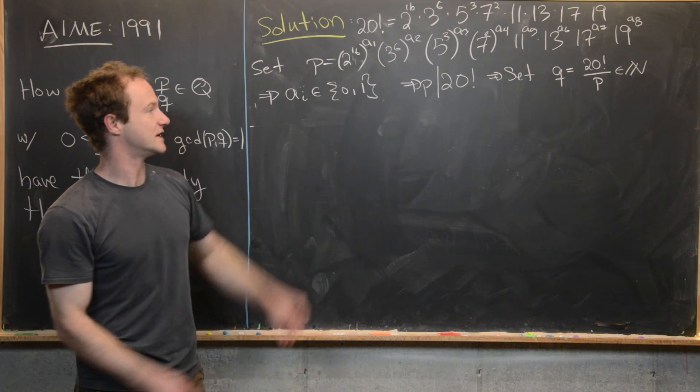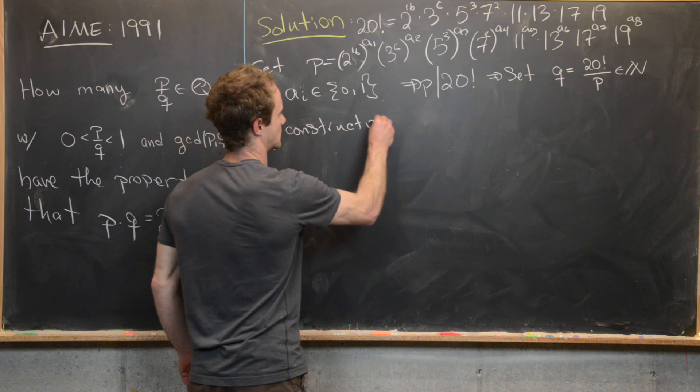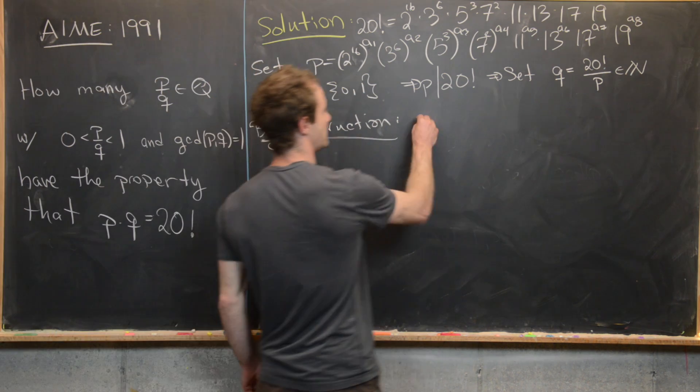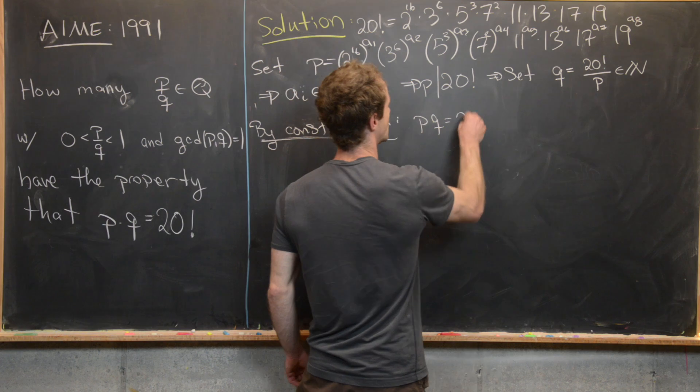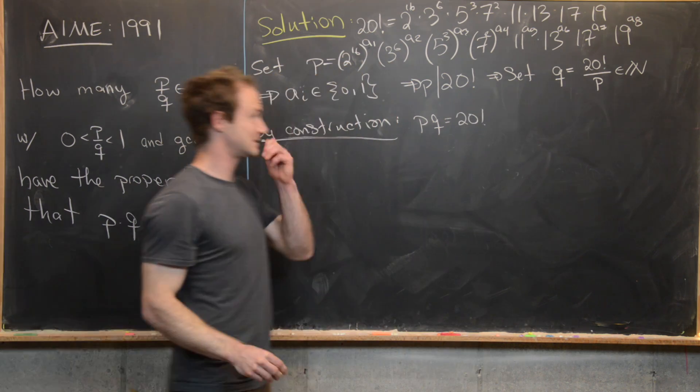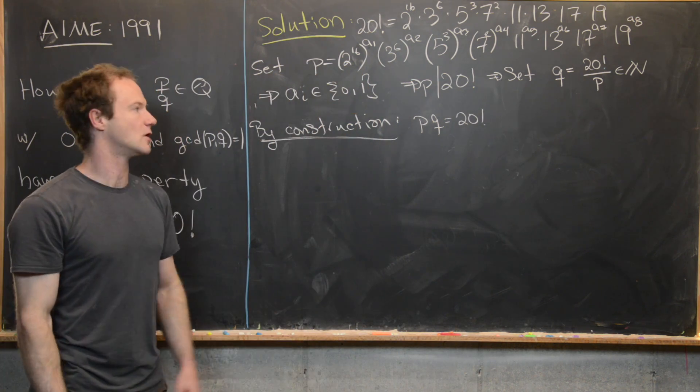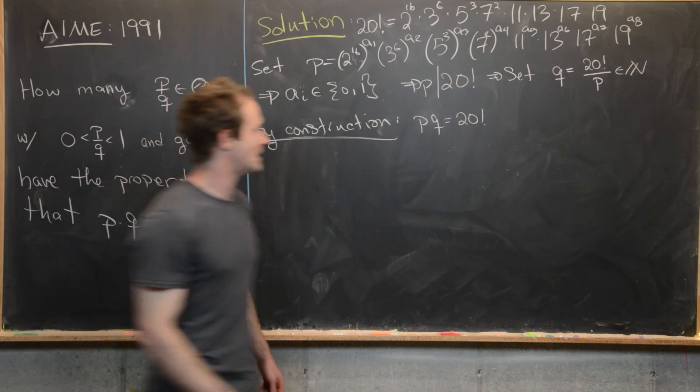So now what we want to notice is by construction, we have two facts. First, P times Q equals 20 factorial. That's pretty obvious because we have P times 20 factorial over P.